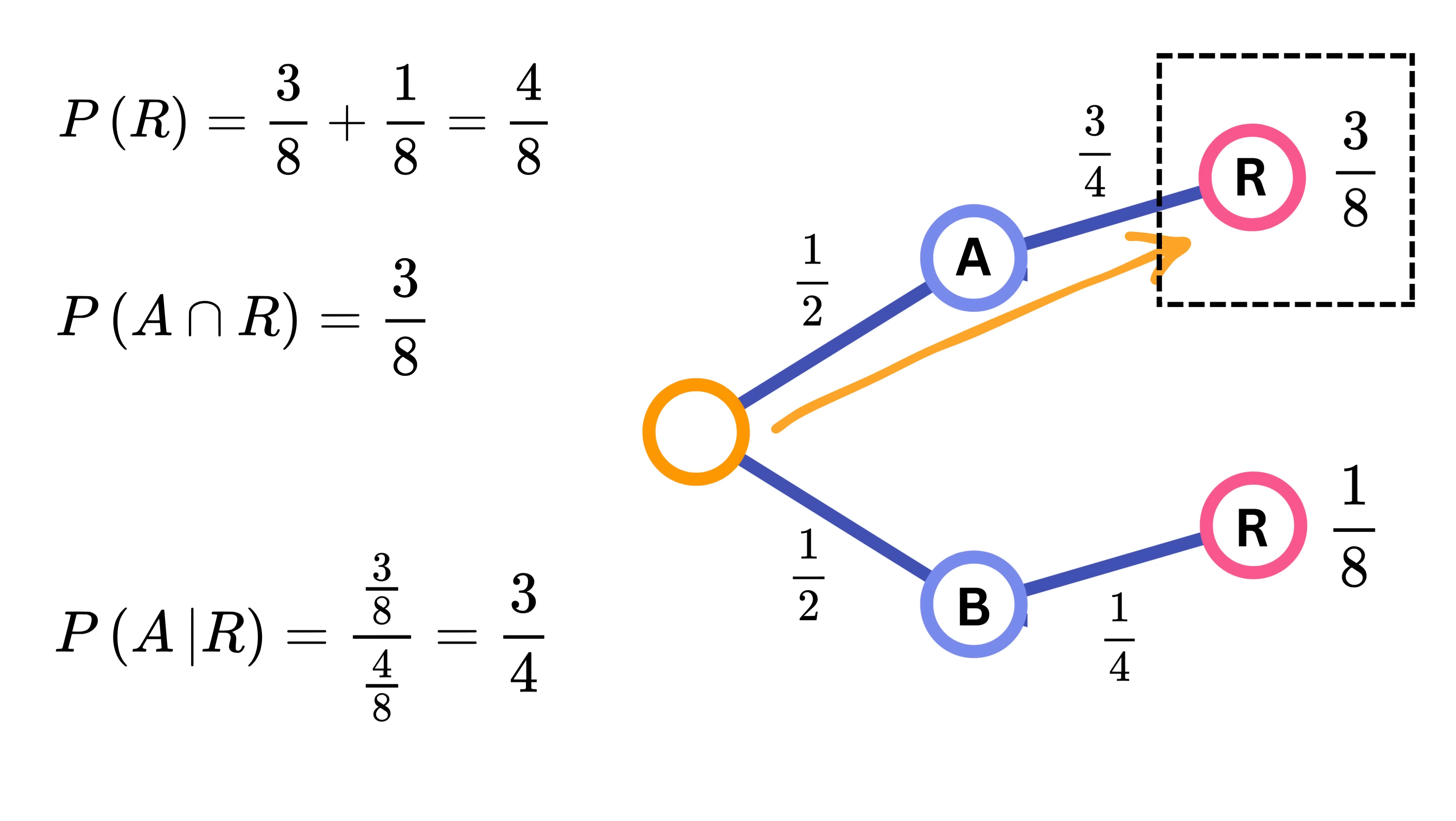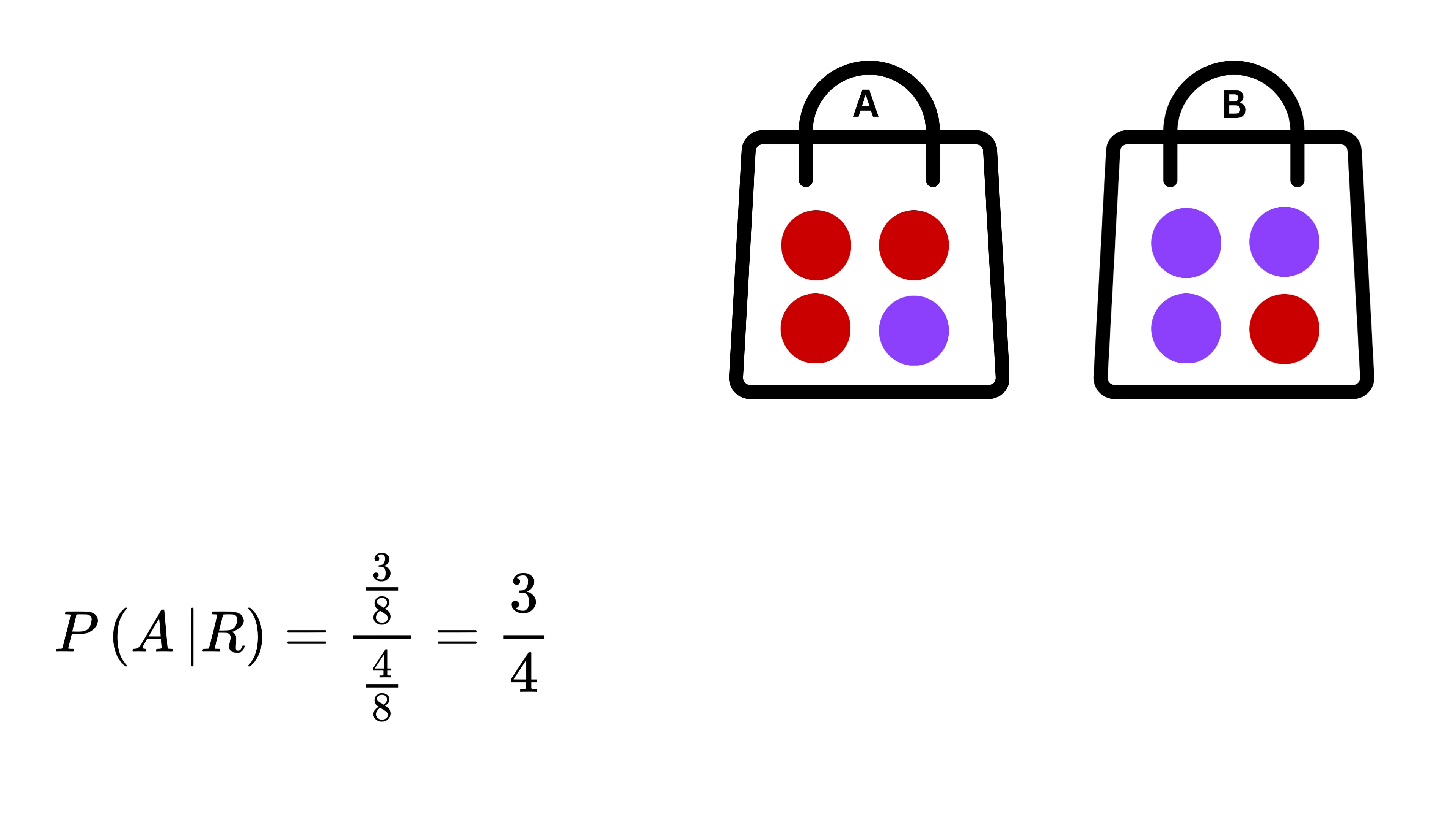This gives 3 over 4. So at the beginning, before we knew anything about the ball we picked, we had an equal 50% chance of having chosen either bag A or bag B. However, after observing that we picked a red ball, our belief about the source of the ball changed. We updated our probability. And now, based on the new information, we calculated that the probability of the red ball coming from bag A increased to 3 divided by 4, or 75%.